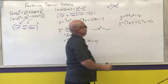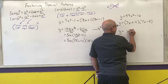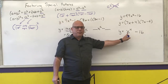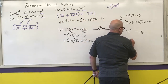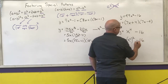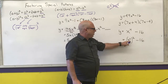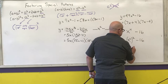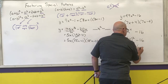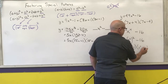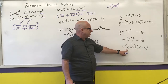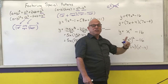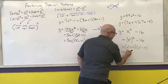Next: y equals x to the fourth minus 16. You might say that's the fourth power, but isn't this the same thing as x squared, quantity squared, minus 16? Yes, because 2 times 2 is 4. The square root of something squared is that something. So the square root of the first is x squared, plus the square root of the last, which is 4, times x squared minus 4. The first factor, x squared plus 4, is a sum of squares — it can't be factored.